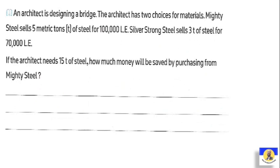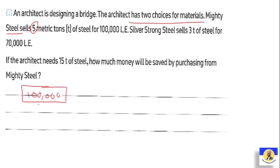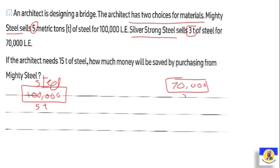An architect is designing a bridge and has two choices for material. Number one: Mighty Steel sells five metric tons of steel for 100,000. Number two: Silver Strong Steel sells three tons of steel for 70,000. If the architect needs 15 tons of steel, which option is cheaper?